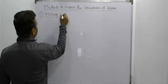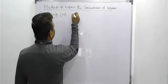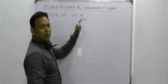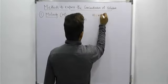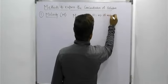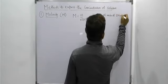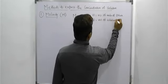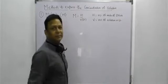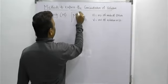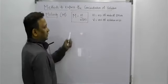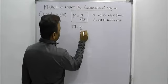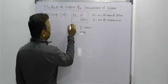What is molarity? It is denoted as M. The formula of molarity is: molarity equals small n divided by volume in liters. Small n indicates the number of moles, and V indicates the volume of solution in liters. Also, molarity equals number of moles divided by volume in mL, multiplied by 1000. This is the second formula we can use.